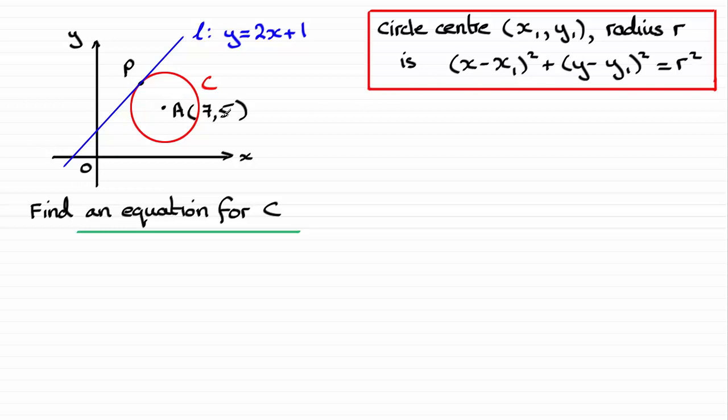So we have the coordinates of the center, we have our x₁ and y₁, 7 and 5 respectively. What we don't have though is the radius r.